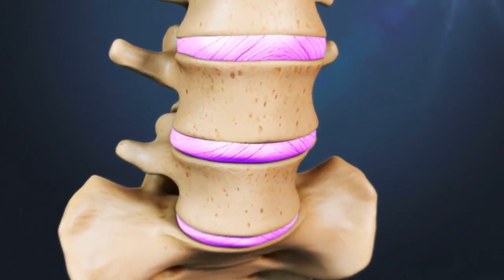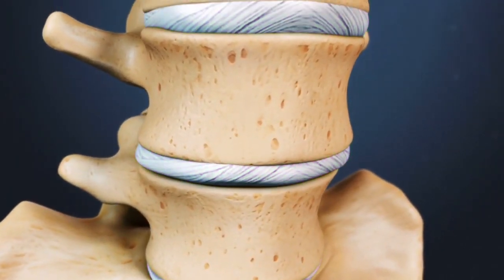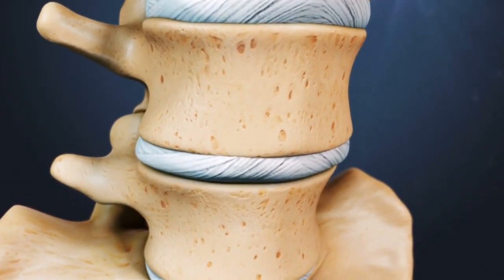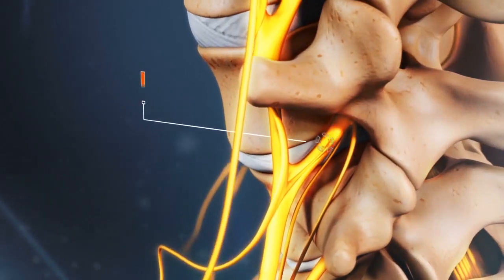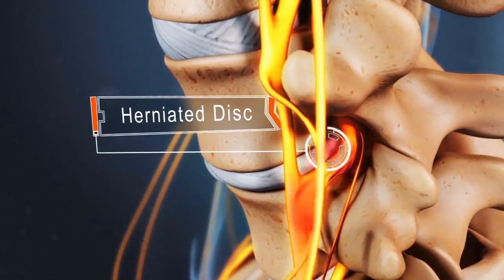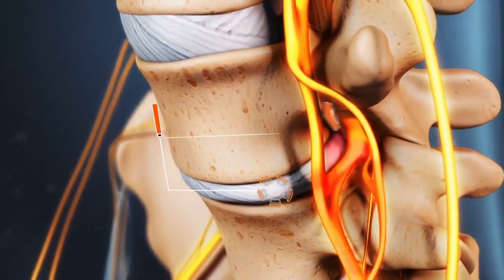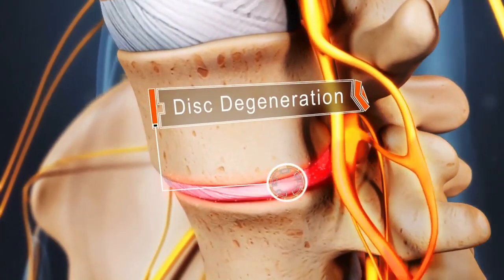In between vertebrae are spinal discs, which cushion the joints of the spine and provide support. Discs in the lumbar region of the spine are most likely to herniate or degenerate, which can cause pain in the lower back or radiating pain to the legs and feet.